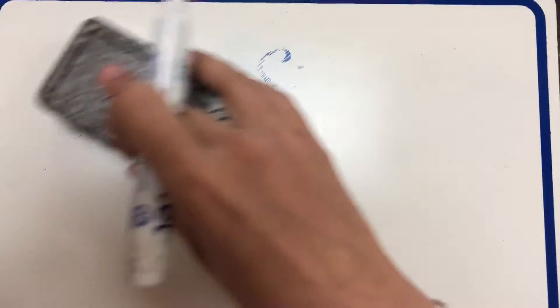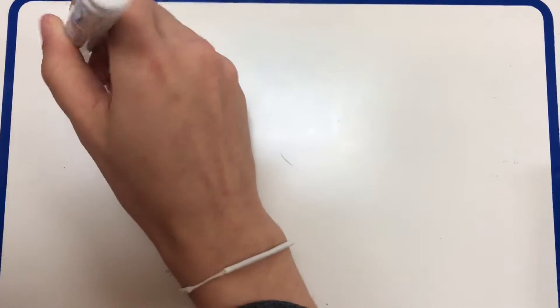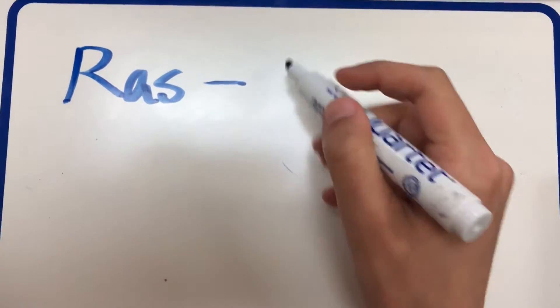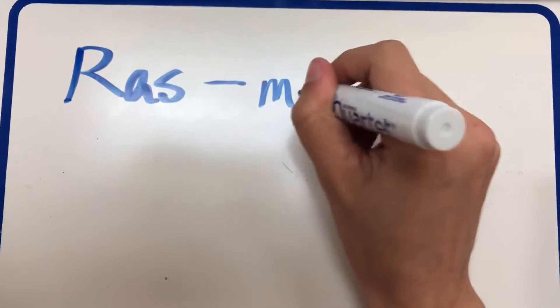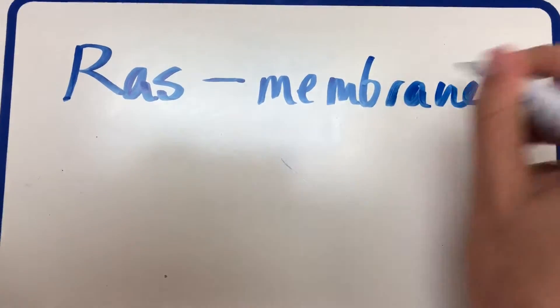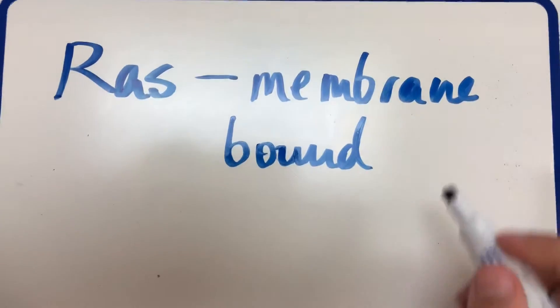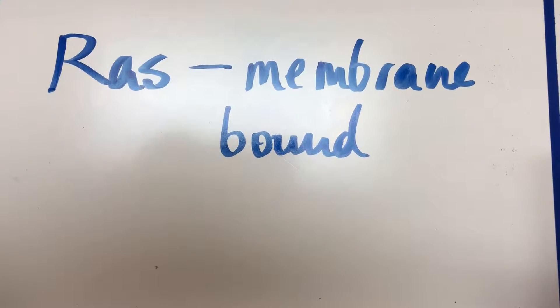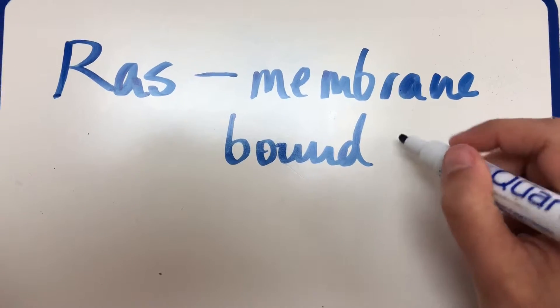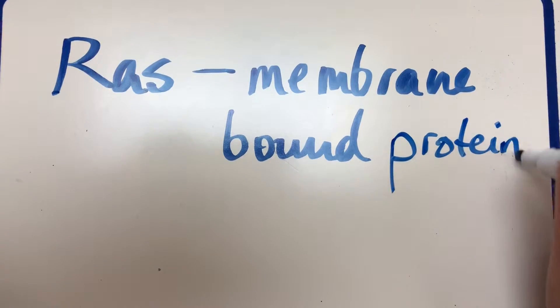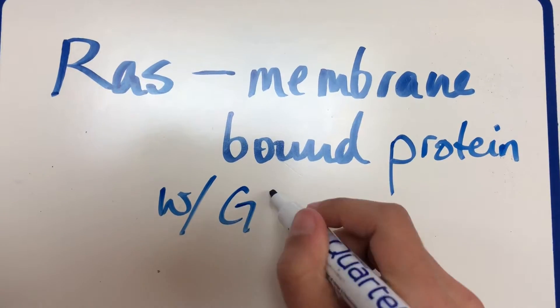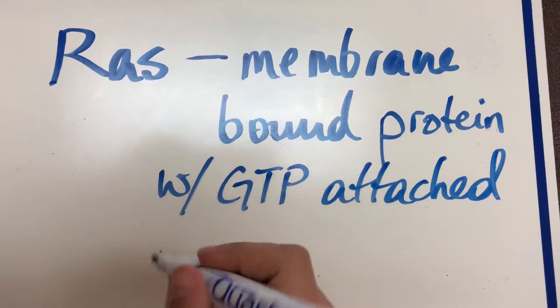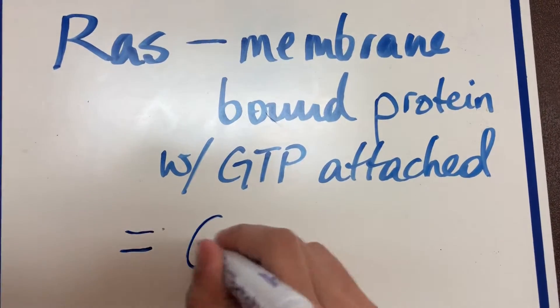So to start off we'll talk about what RAS is. RAS is a protein that's attached to the membrane, so it's membrane bound. It's a membrane-bound protein that has GTP bound to it. So membrane-bound protein with GTP attached, and this is the same as a G protein.